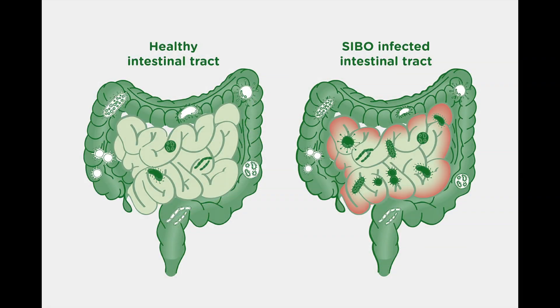So first and foremost, the question for most of you is probably: what is SIBO, or what is small intestinal bacterial overgrowth? This is a condition where basically there's an overgrowth of microorganisms in the small intestine, which is normally a rather sterile organ — unlike the colon or the large intestine, the small intestine usually has little to no bacteria.